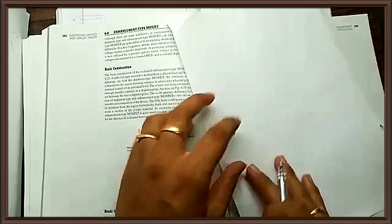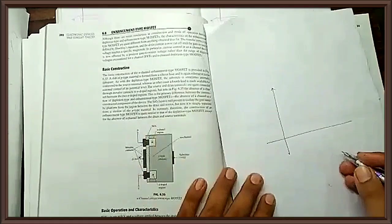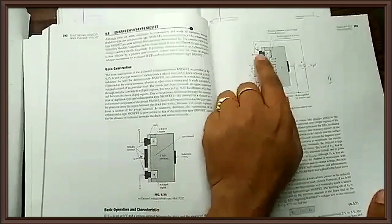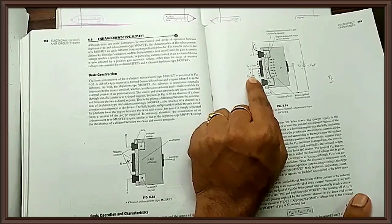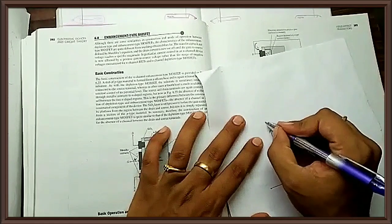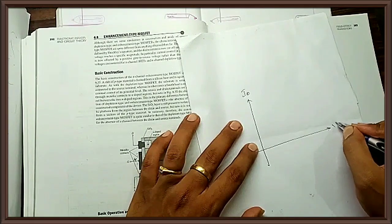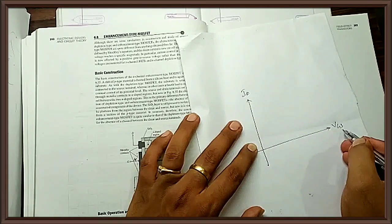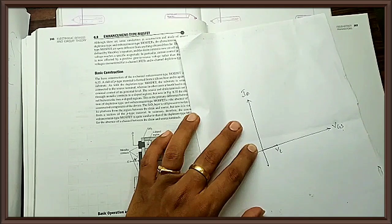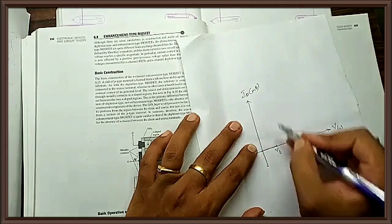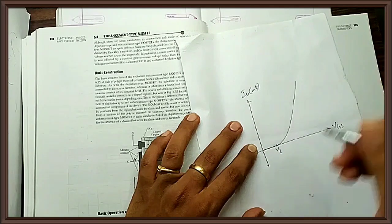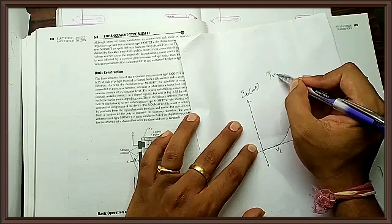If I draw a transfer characteristic — that is a plot of output current ID versus input voltage VGS — for voltages below VT current will not flow, since that minimum voltage is necessary to establish the channel. I measure current in milliamperes, so any current in the nanoampere range is considered zero. After threshold voltage VT, the current starts increasing rapidly. This is the transfer characteristic.